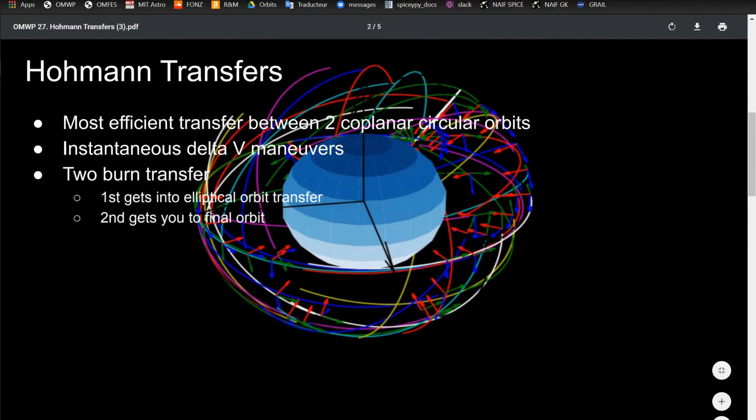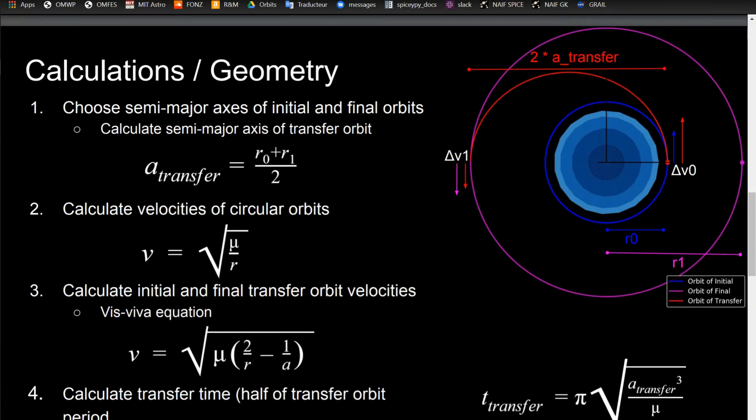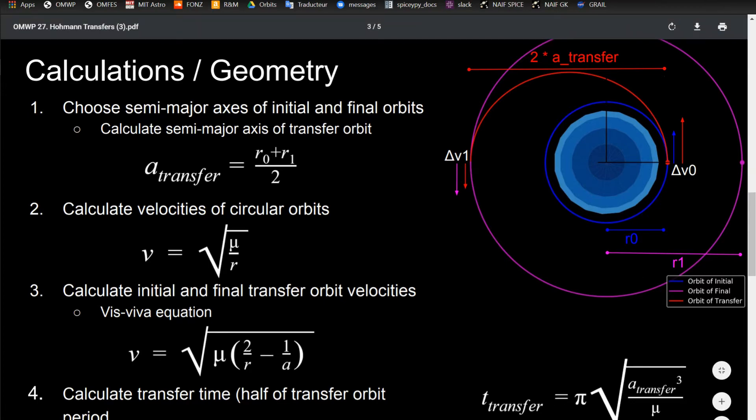As I said, it's a two burn transfer. The first one gets you into the elliptical orbit transfer, and the second one gets you into your final orbit. Going over the calculations and geometry, first I'll explain the diagram on the right. Just like the GIF, you have the initial orbit close to the central body.